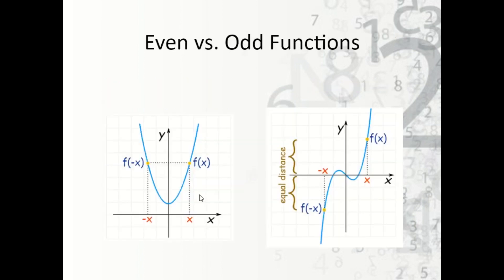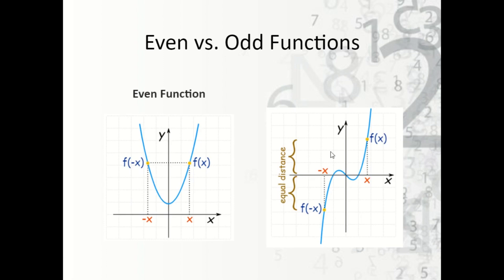What does this really look like? For an even function, if I look at one side of the y-axis and flip it over, it becomes the other side — every point reflected across the y-axis lands exactly where it needs to be. That's an even function. For an odd function, I spin it 180 degrees. Each point spun 180 degrees ends up in the correct position, so the whole function is rotated around the origin. That's an odd function.